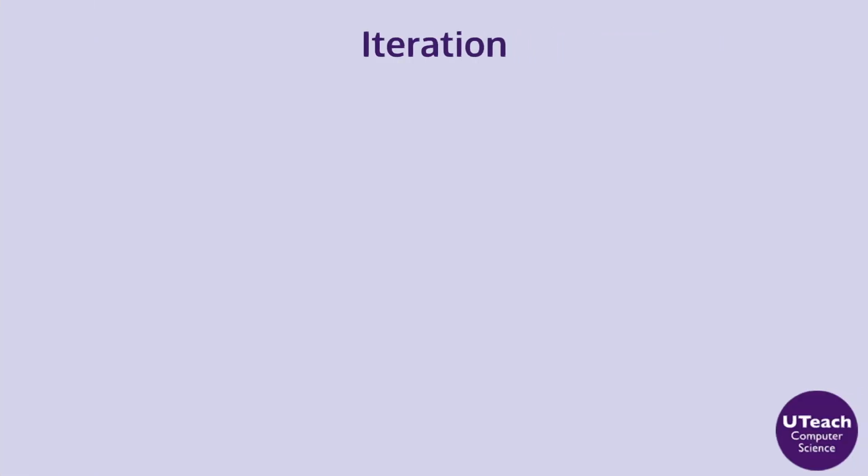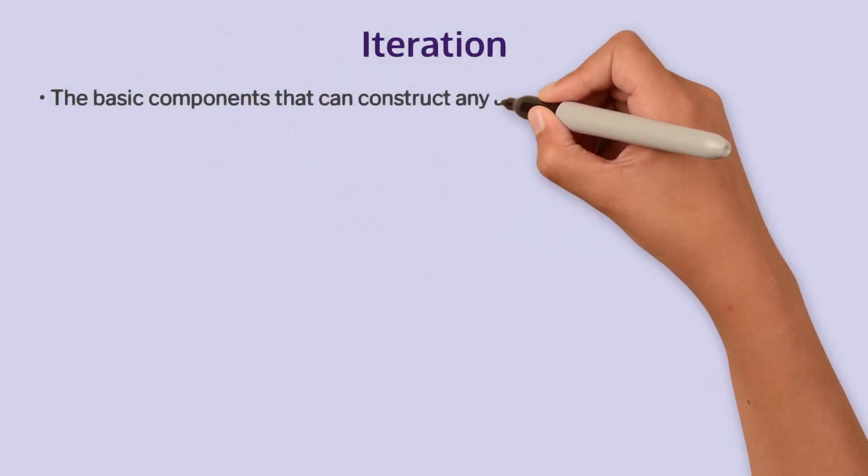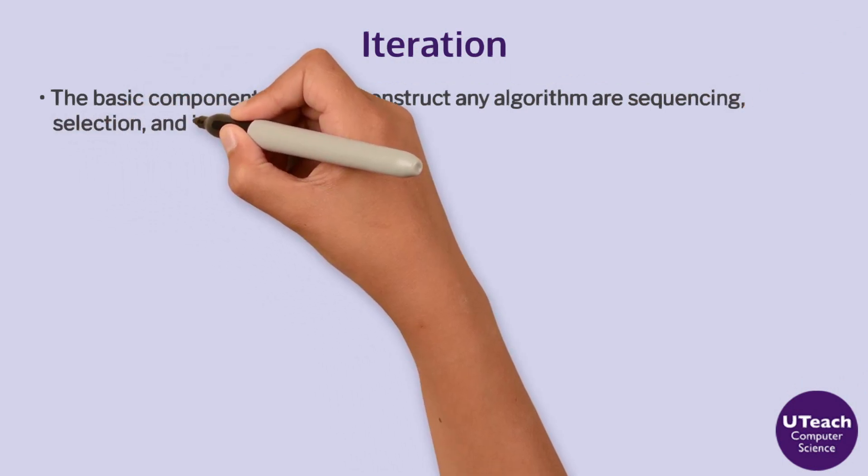To recap iteration. The basic components that can construct any algorithm are sequencing, selection, and iteration.